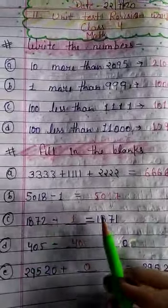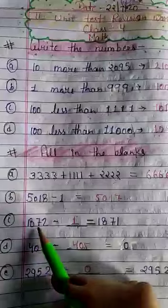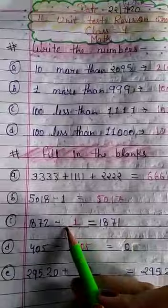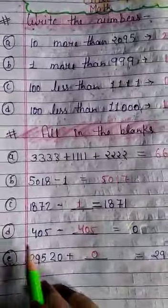ठीक है। अब हमें कितना minus करना पड़ेगा 1,872 में कि हमारा 1,871 हो जाएगा? तो कितना minus करना पड़ेगा? 1. इस तरह D देखेंगे हम।